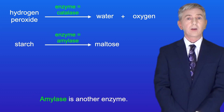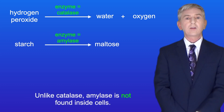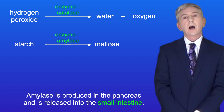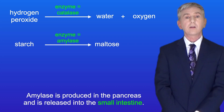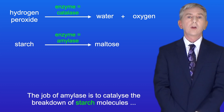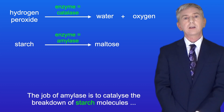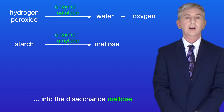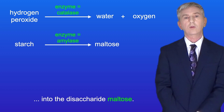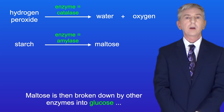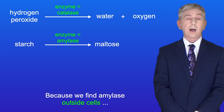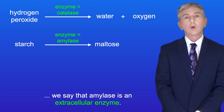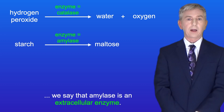Amylase is another enzyme, but unlike catalase, amylase is not found inside cells. Amylase is produced in the pancreas and is released into the small intestine. The job of amylase is to catalyse the breakdown of starch molecules into the disaccharide maltose. Maltose is then broken down by other enzymes into glucose, which is absorbed into the bloodstream. Because we find amylase outside cells, we say that amylase is an extracellular enzyme.